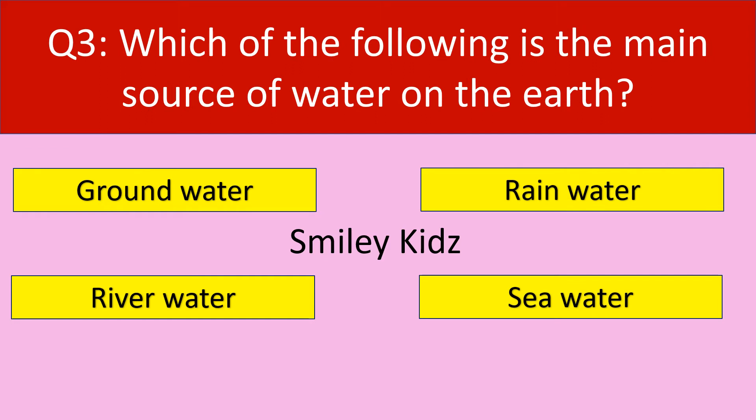Question number 3. Which of the following is the main source of water on the earth? Your options are: groundwater, rainwater, river water, seawater. Your time starts now.